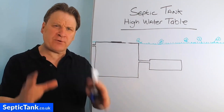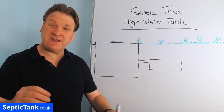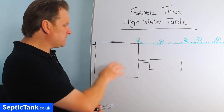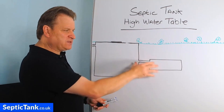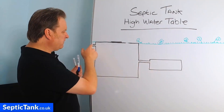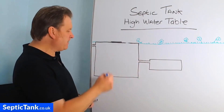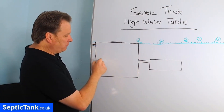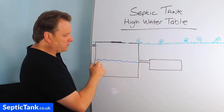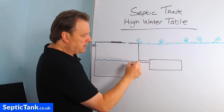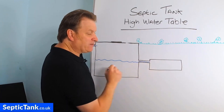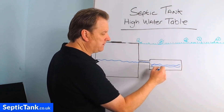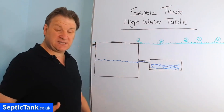Let me show you the problems that come from living in an area where the water table is quite high. So this is your septic tank and this is your soak away. You've got your inlet pipe and your outlet pipe. Water comes into the septic tank and fills up to a certain level — this is your waste water. It then makes its way down the outlet pipe and into the soak away. That's how a septic tank and soak away work.